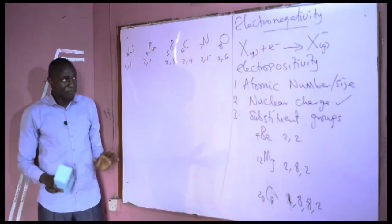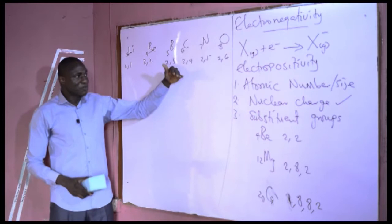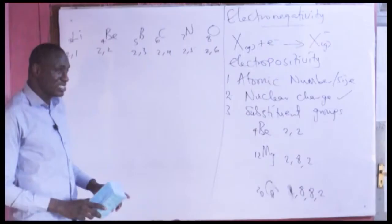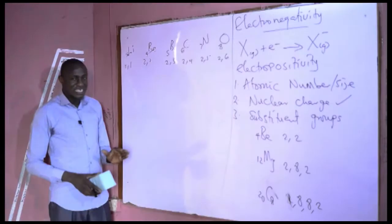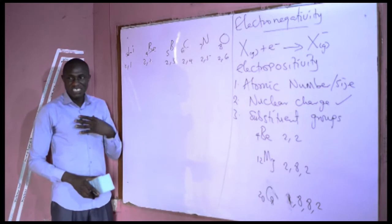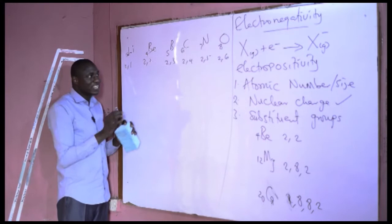The most electronegative element is usually the Group 17 member of any period. One important thing to note is that ever since we started discussing periodic properties, we have not mentioned Group 18 — the noble or inert gases — because they have a stable electronic configuration and their tendency to either lose or gain electrons is very low, making their electronegativity essentially irrelevant.